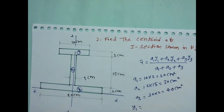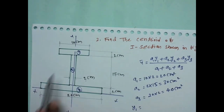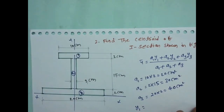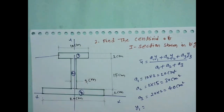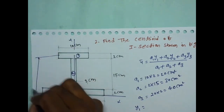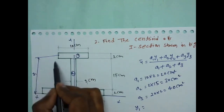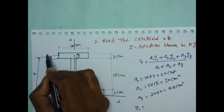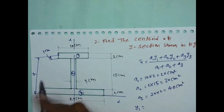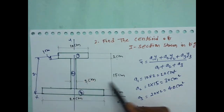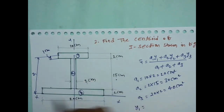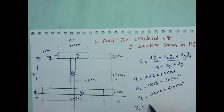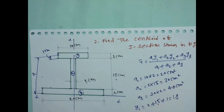Now Y1 is the distance between the reference X-axis and the centroid of the first rectangle. It is measured from the bottom: 2 (bottom flange) + 15 (web) + half of top flange (1) = 18 cm. So Y1 = 18 cm.